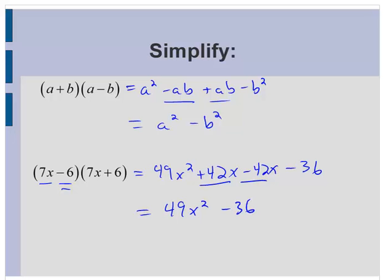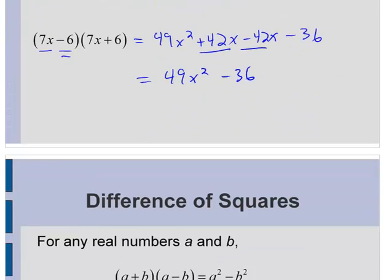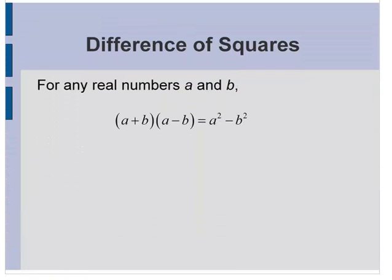So notice that the square of 7x is 49x squared, and the square of 6 is 36. And this will happen every single time when we have this a plus b, a minus b pattern. In general, for any real numbers a and b, a plus b times a minus b is a squared minus b squared.